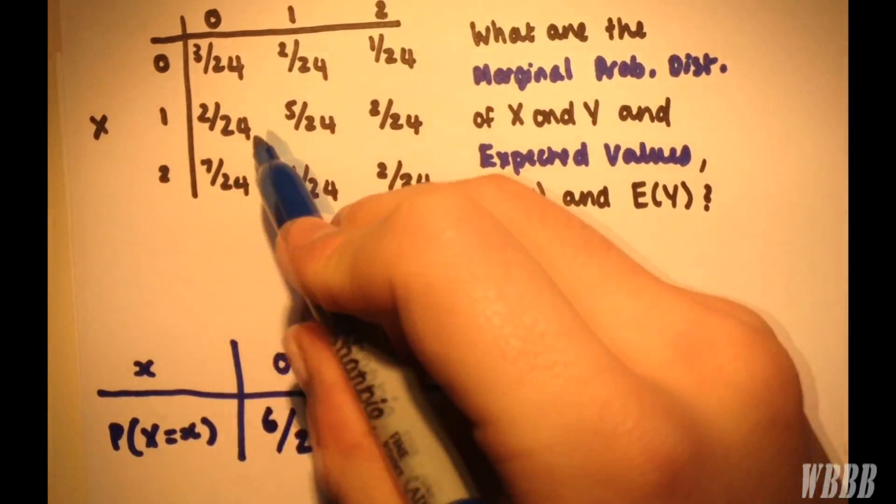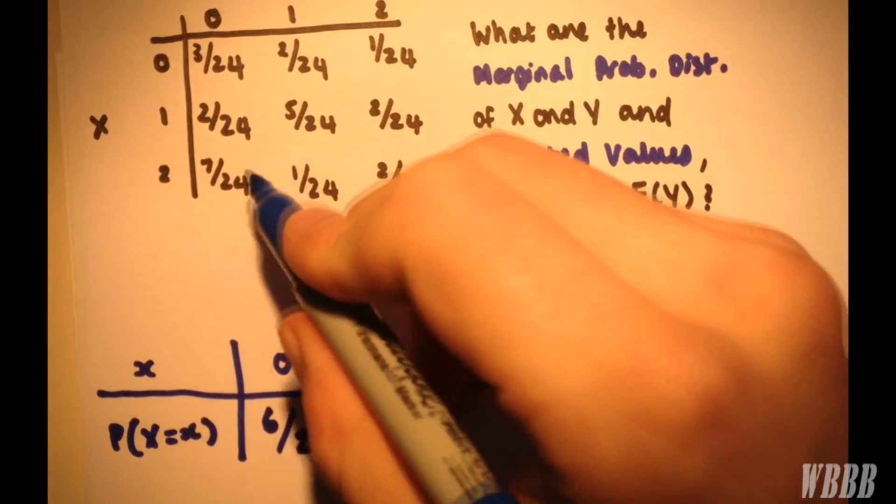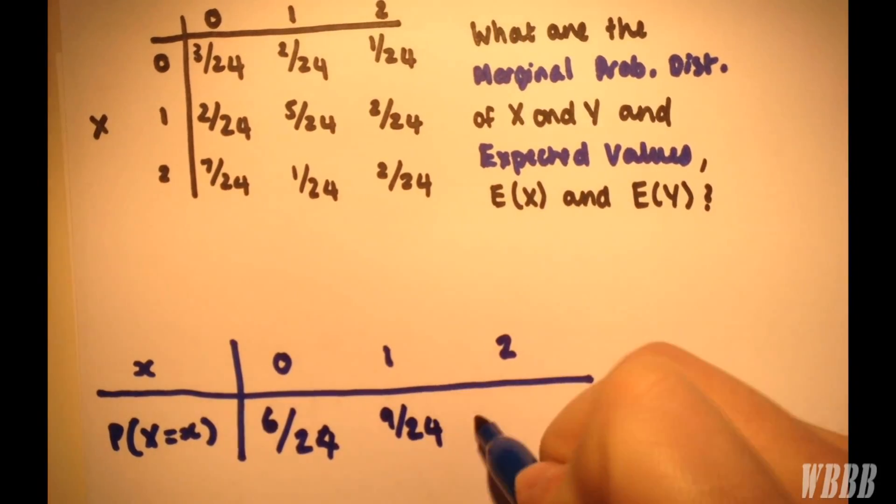Similarly for 1, 2, 5, and 2 give 9 over 24. And for 2 here, we have 7, 1, and 2, which is 10.